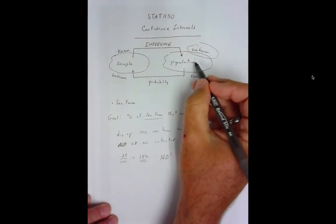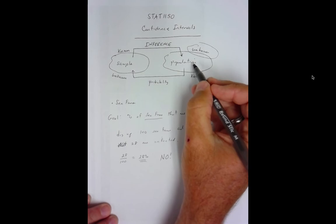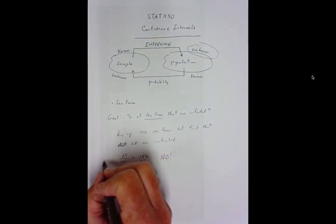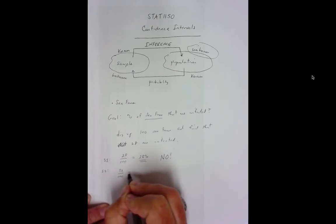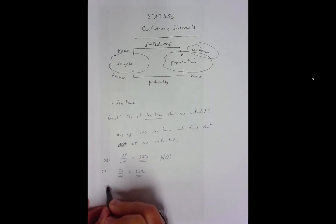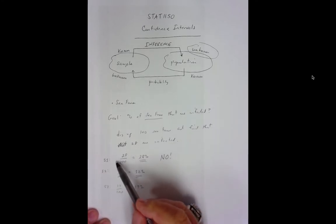Let's say we dig up 100 sea fans and find that 28 are infected. Now, so this tells us that 28 out of 100 of our sample are infected. So, that tells us that 28% of the sea fans are infected. Now, does that mean that it's 28% of the population? Absolutely not. This is a sample. This is 100 out of who knows how many millions of sea fans there are worldwide.